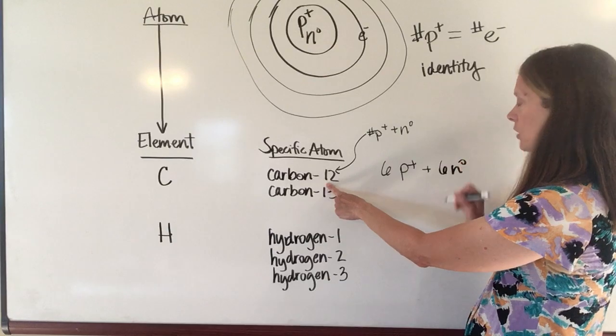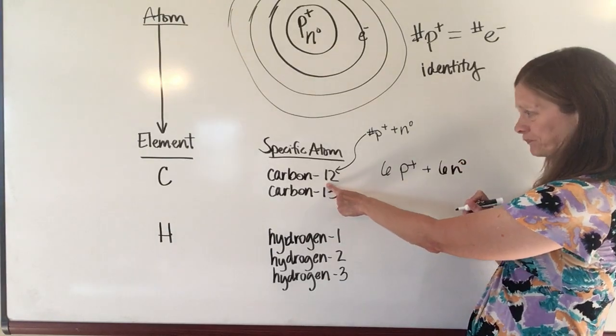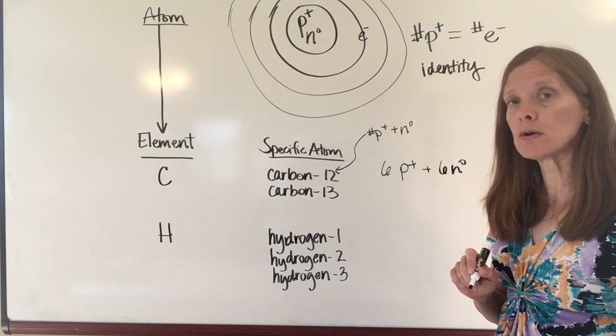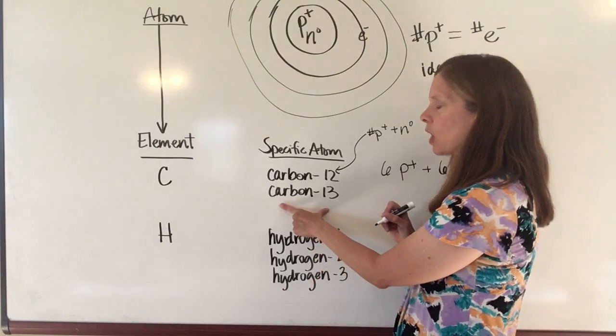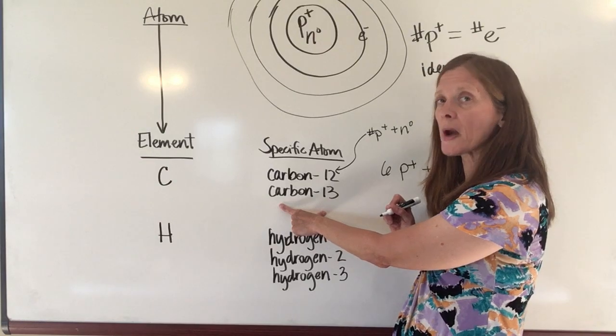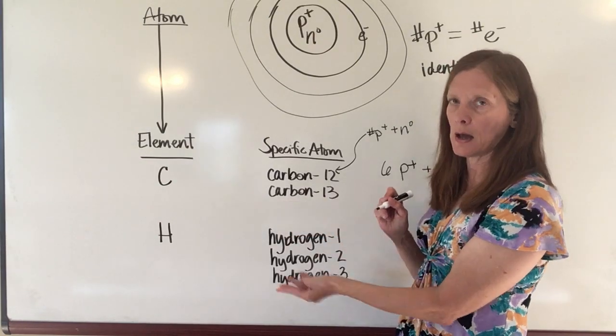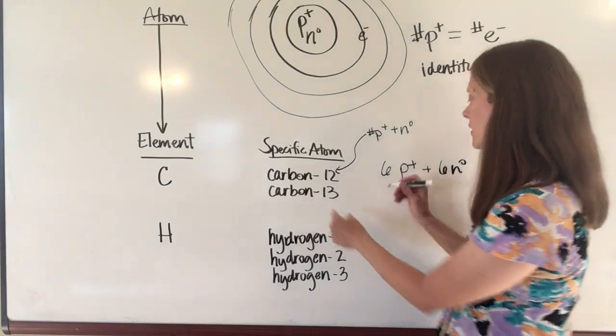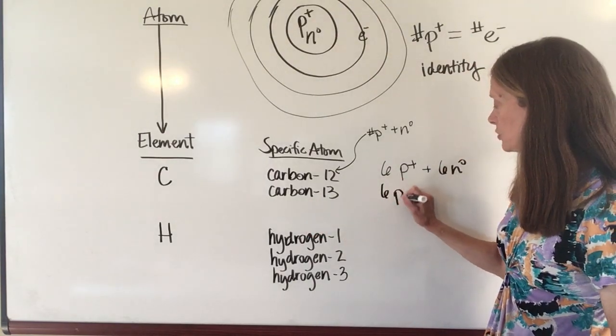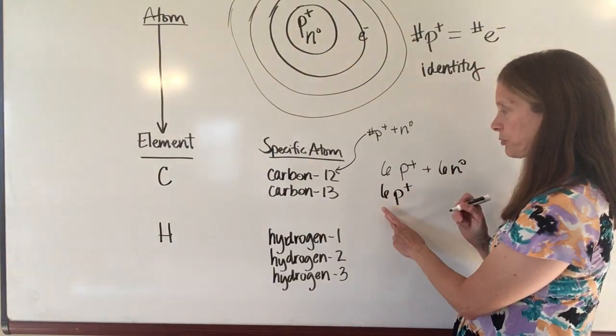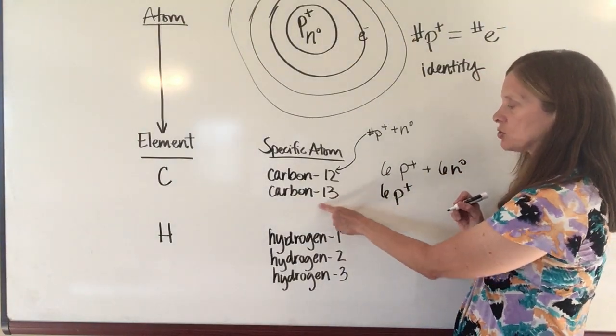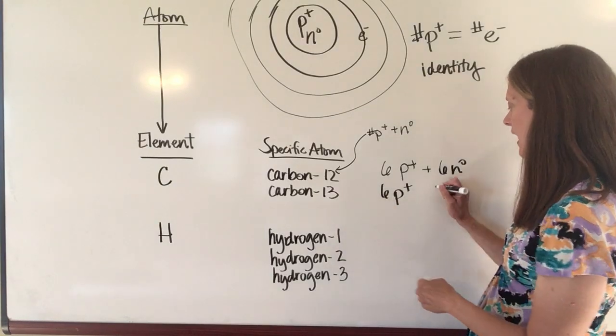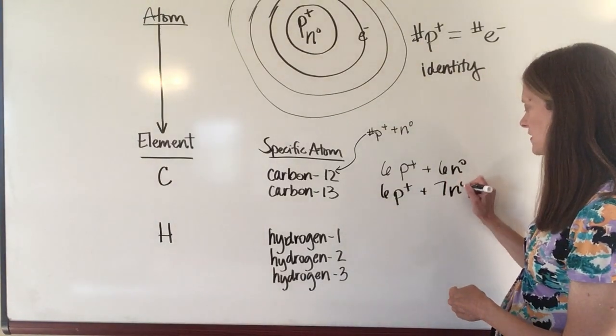You've probably heard of radiocarbon dating or carbon-13 dating. Carbon-13 is a much more rare form of carbon that occurs in nature as well, and a carbon-13 atom will also have six protons in it, because all carbons have six protons. But the total mass of this atom is 13, so that means I'm going to have seven neutrons in this atom.